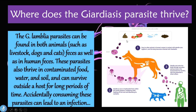This parasite thrives in contaminated food, water, soil and waste sources, and in this way is able to transmit itself to either an animal host or a human host. The most affected animals are livestock such as cattle, cows and sheep, but domesticated animals such as dogs and cats can also be infected. When a dog, other animal, or human comes into contact with the Giardia cyst and ingests it, the body becomes infected with giardiasis.